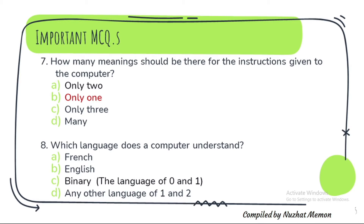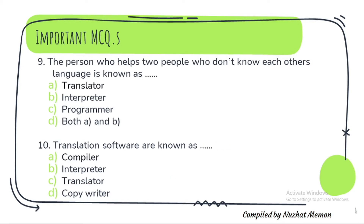Question 8: Which language does a computer understand? A computer understands only one language — binary, that is the language of zero and one. Question 9: The person who helps two people who don't know each other's language is known as a translator. Question 10: Translation software are known as compiler.